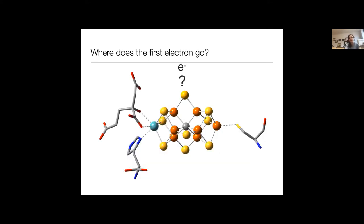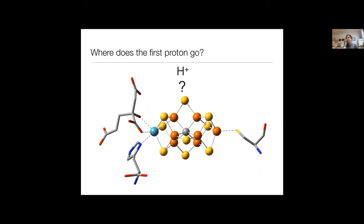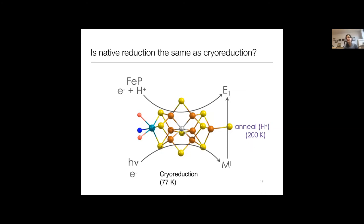So what is the question we're asking? We really want to know where does the first electron go when we're thinking about the mechanism? Does it go to the molybdenum or does it go to the iron? And where does the proton go? Does it perhaps actually form a hydride, which is thought to be mechanistically important? Or does it maybe protonate a bridge? And can we tell? So we'd also like to understand whether or not cryoreduction is really related to native reduction simply through annealing.